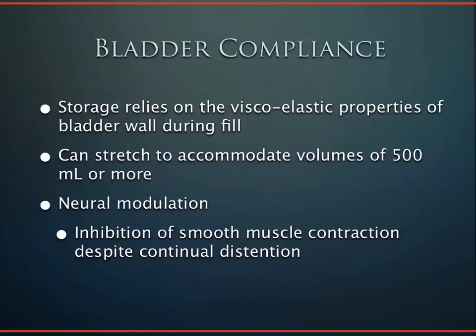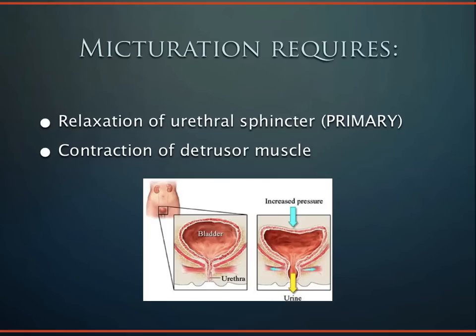The bladder's compliance is remarkable — relying on the viscoelasticity of the bladder wall while filling. It can expand to 500, 600, 700 cc's; my record in the ED was a patient with 1,400 cc's of urine. Micturition — the fancy word for urination — occurs through primarily urethral relaxation and secondarily contraction of the detrusor muscle. After voiding, there should be little or no urine left; the amount remaining is termed the post-void residual or PVR.